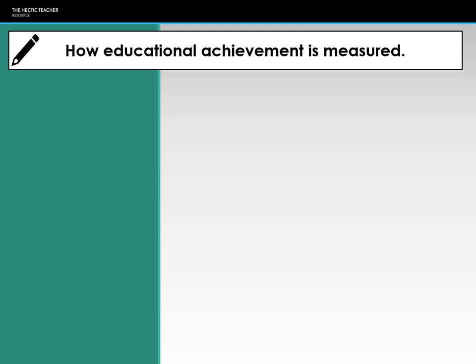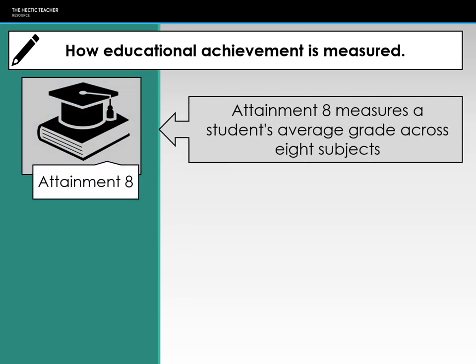Moving into more complex systems introduced by Michael Gove as Education Secretary — the EBAC and Attainment 8. Attainment 8 applies only to GCSE and takes the eight subjects a student takes, broken down into three groups. Group one is English and maths, which are double-weighted, meaning they count twice.